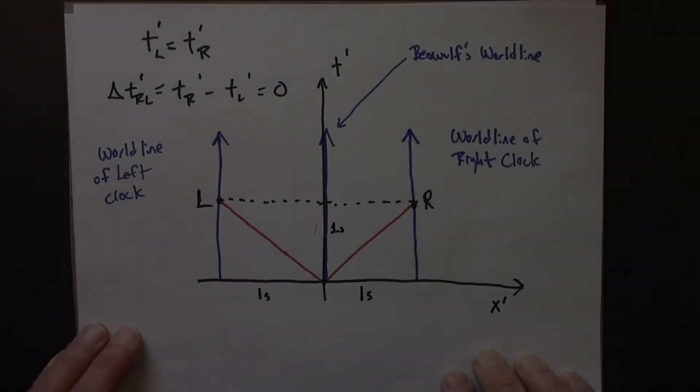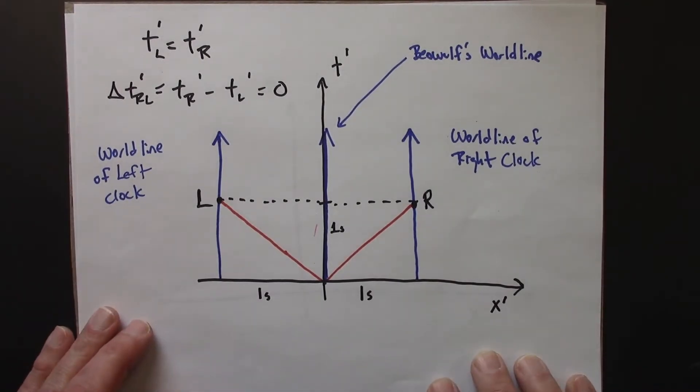So let's take a look at the situation using a space-time diagram in Anastasia's reference frame. So this was a space-time diagram in Beowulf's reference frame, in a reference frame that's moving along with these moving clocks.